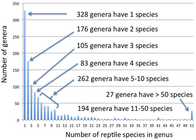A genus, whose plural is genera, is a taxonomic rank used in the biological classification of living and fossil organisms, as well as viruses, in biology. In the hierarchy of biological classification, genus comes above species and below family.